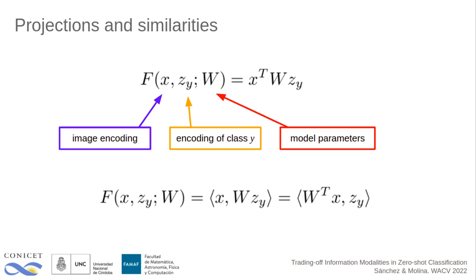The equality on the right hand side of the last equation follows from the linearity of the dot product and the projection by W. Replacing either of these steps by a nonlinear operator breaks the symmetry and makes the similarities defined on the visual and semantic spaces behave differently. In our work we consider the case of replacing the dot product by a cosine similarity, denoted by a double bracket operator in the figure. The projection step in this case corresponds to the multiplication by W and a normalization onto the unit sphere.